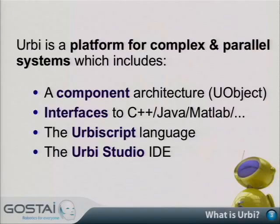To summarize what Herbie is: it's a platform to handle complex and parallel systems, which includes four things. There's a component architecture called uObject that lets you connect components and extend Herbie. There are interfaces to C++, Java, and MATLAB, with no issue extending to Python or other languages. And there's the language itself and the Herbie Studio IDE.